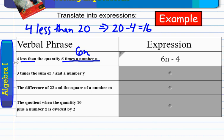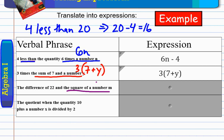Second statement is three times the sum of seven and a number y. So, let's do the sum of seven and a number y. That must be seven plus y. And I want three times whatever that is, so I need to multiply all of it. So, I put parentheses around it. Three times seven plus y. Third one, the difference of 22 and the square of a number m. Let's do square of a number m. That's m squared. Now, I want the difference of 22 and m squared. Difference is subtraction. So, it's going to be 22 minus m squared.